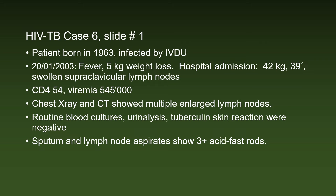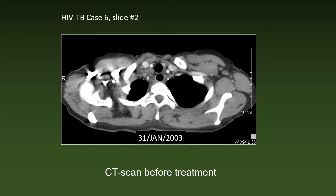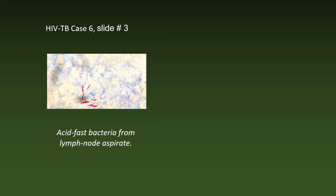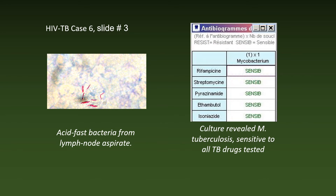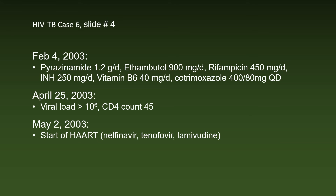But the sputum and lymph node aspirates showed abundant acid-fast rods. A CT scan just before start of antituberculosis treatment showed enlarged paratracheal lymph nodes. Acid-fast bacteria were seen in the lymph node aspirate and culture revealed Mycobacterium tuberculosis, sensitive to all TB drugs tested. Following guidelines current at that time, antituberculosis treatment with four drugs was started on February 4th, 2003, with vitamin B6 and co-trimoxazole to prevent PCP. But HAART was withheld.